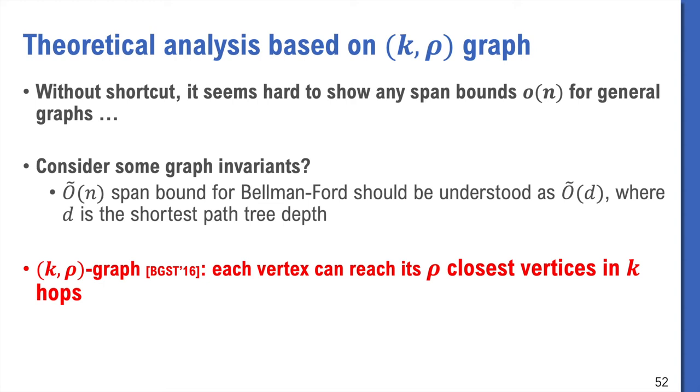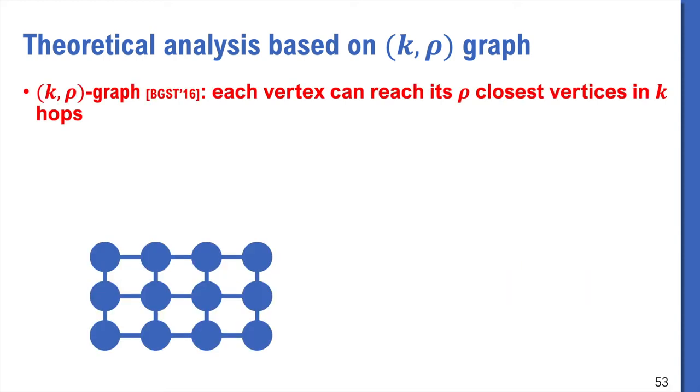Our idea is to use the k-rho graph proposed in the radius stepping paper. A graph is a k-rho graph if each vertex can reach rho closest vertices in k hops. It generally states how much progress we can make by looking at k steps. For example, if we have a graph like this. Assume each edge is unit weight. Then this graph is 1-3 graph. Because each vertex can reach the 3 closest vertices in one hop. However, if we want to reach 4 closest vertices, some of them may need to go out 2 hops. So it is a 2-4 graph. Actually it is also a 2-6 graph.